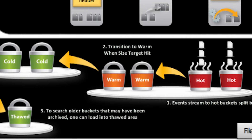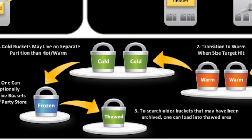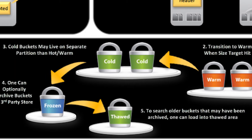The next stage is called a warm bucket, which is actively searchable, but no new data will be written to a warm bucket. A new hot bucket is created to replace that bucket once it's rolled. There can be a large number of warm buckets open on an indexer. When certain conditions are met — like when an indexer reaches its maximum number of warm buckets — the warm bucket will be rolled, or converted, into a cold bucket, oldest warm bucket first.